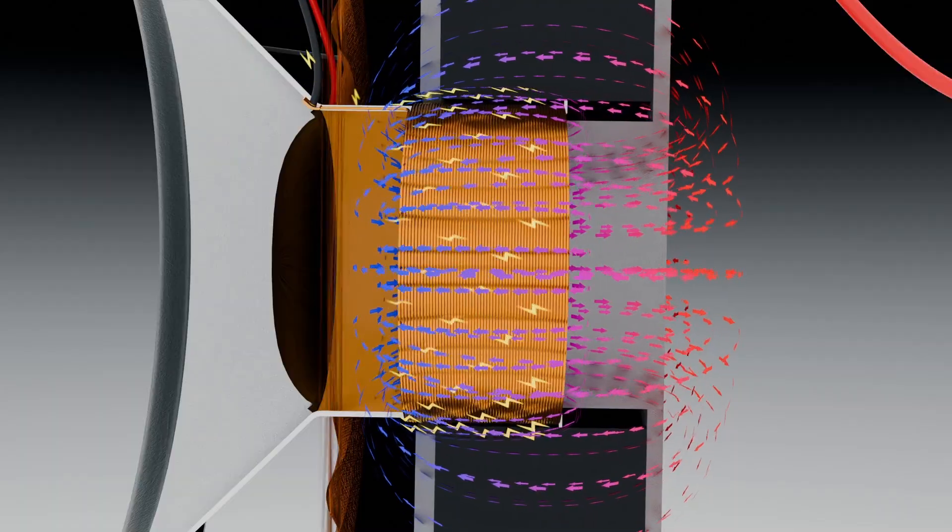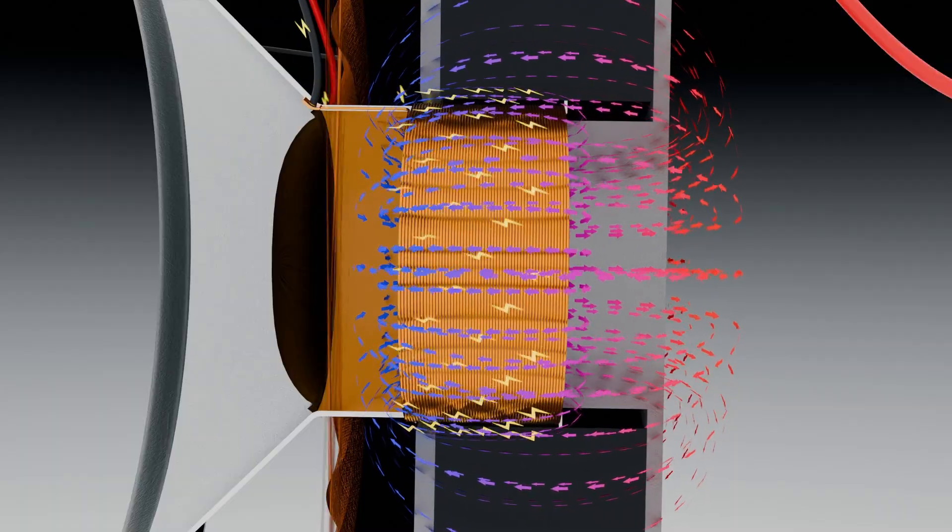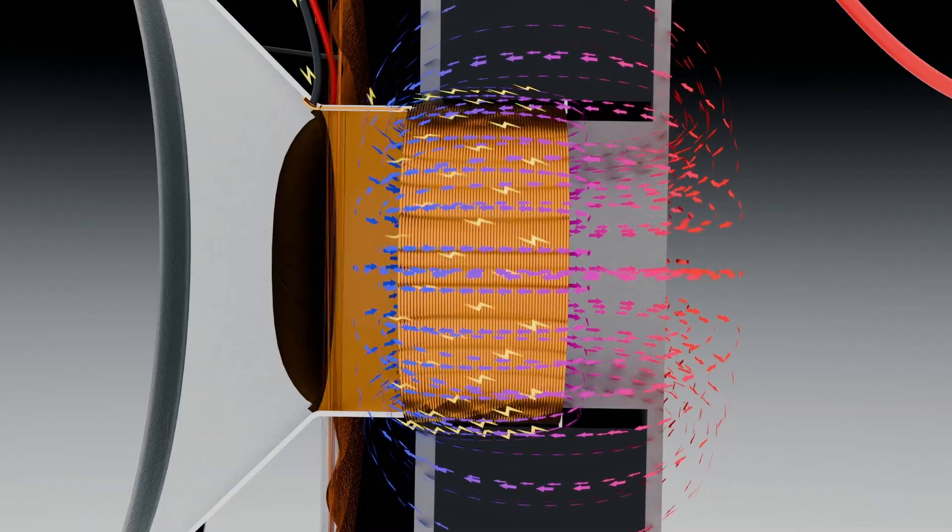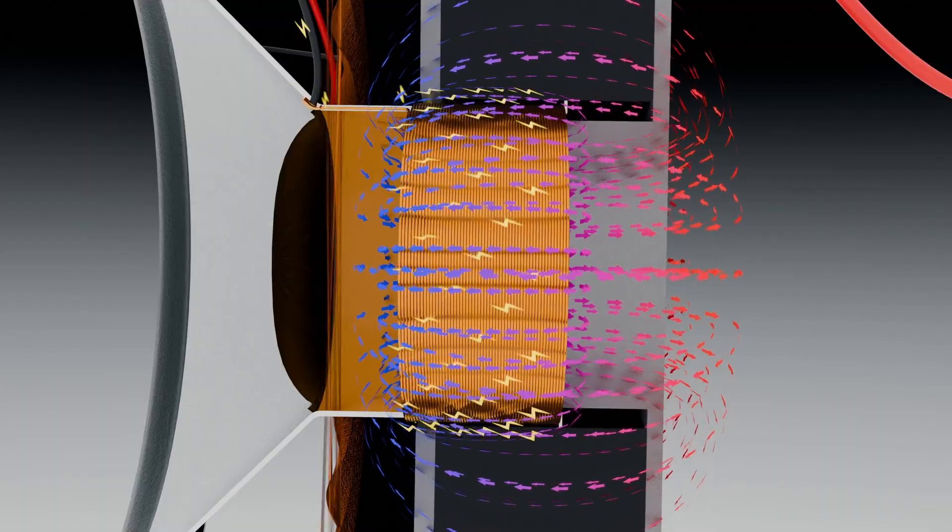If the directions of the two magnetic fields are opposite, an attractive force is produced. If the directions are the same, a repulsive force occurs.